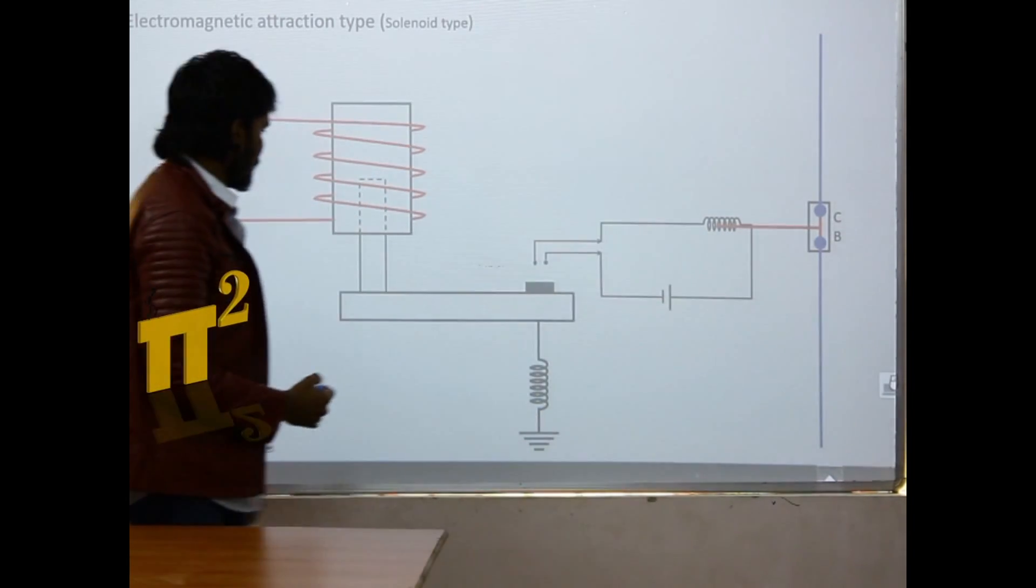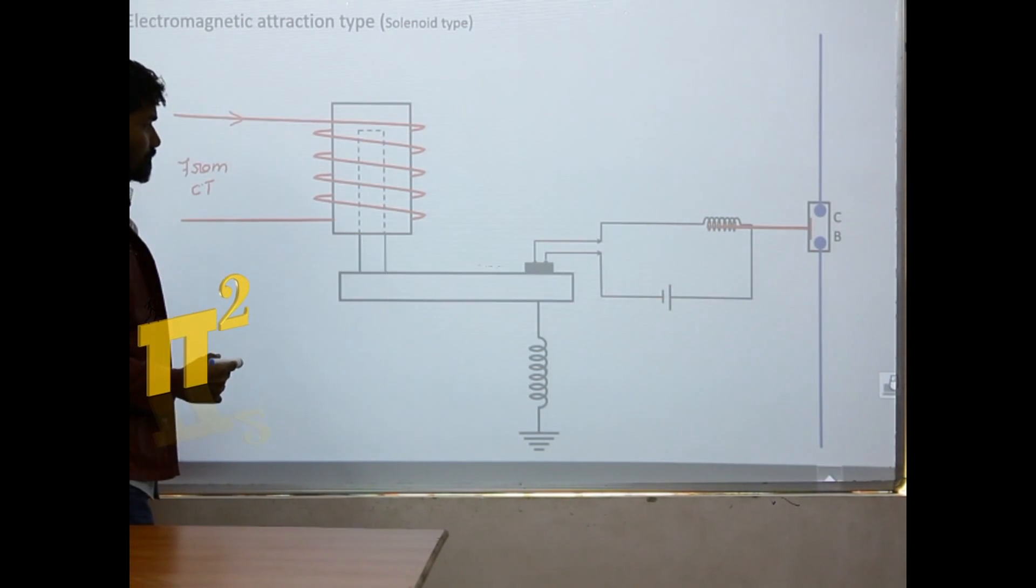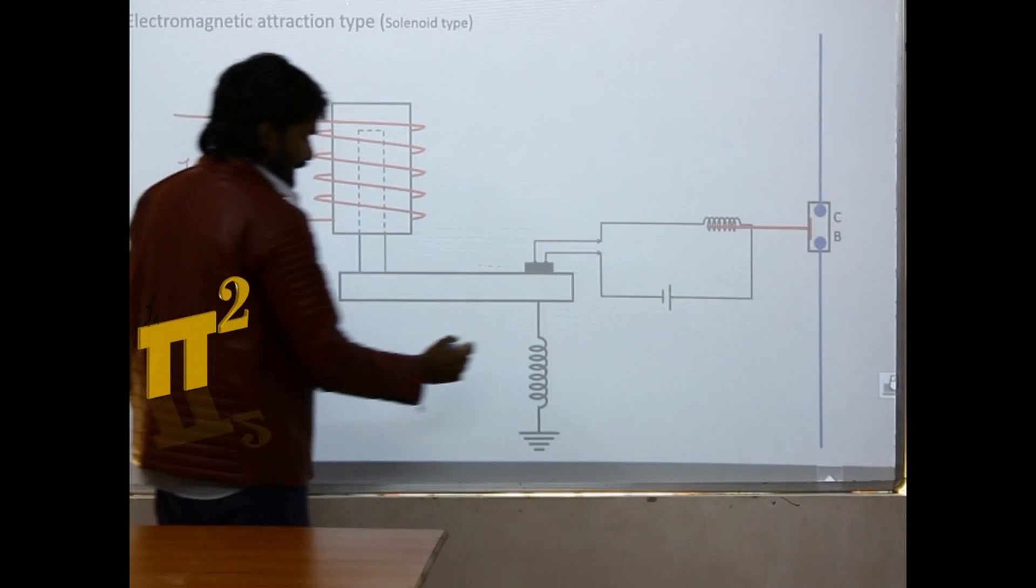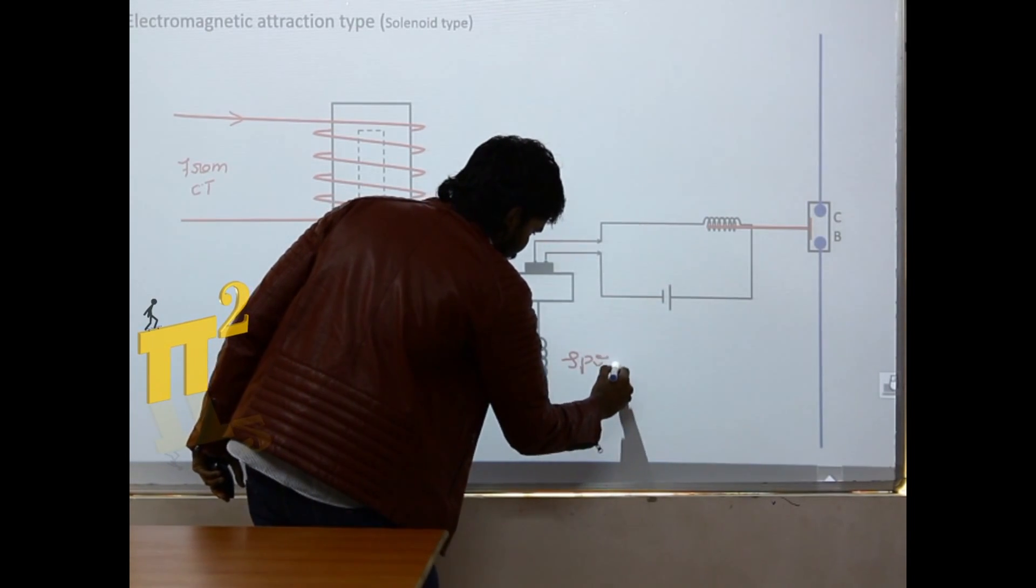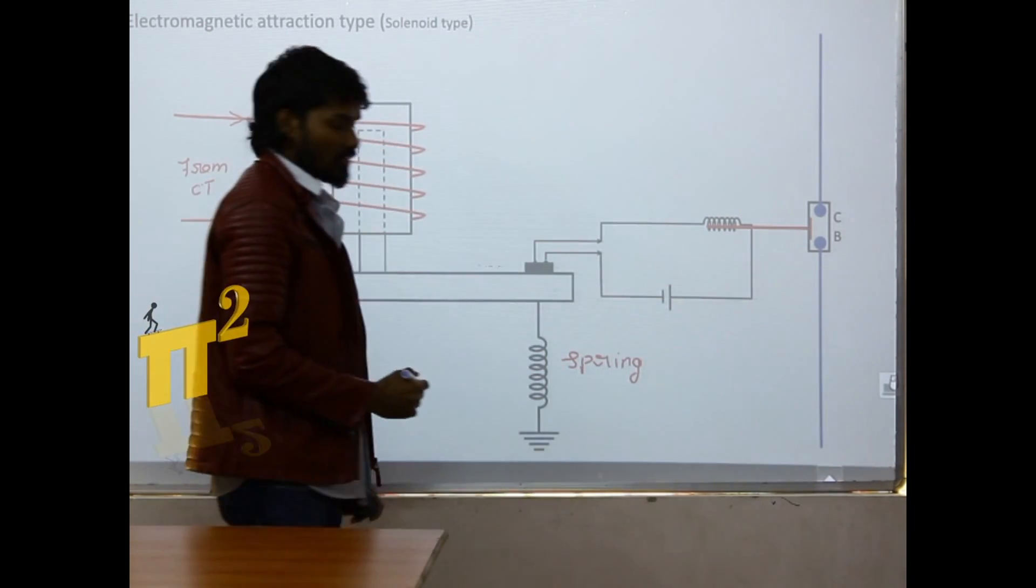And again the CB will move up. Let's see, for high currents. Yes, and this is a spring to provide the restraint torque.